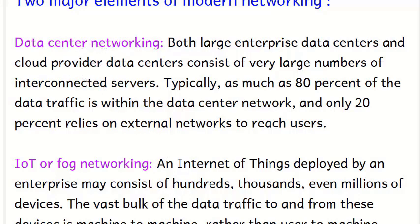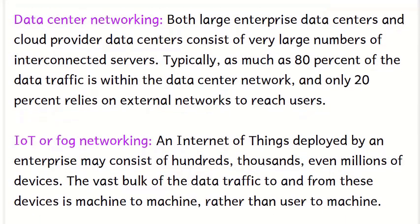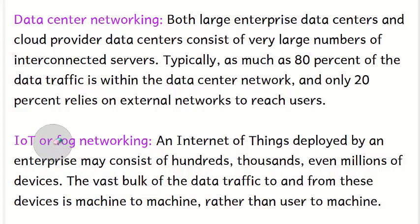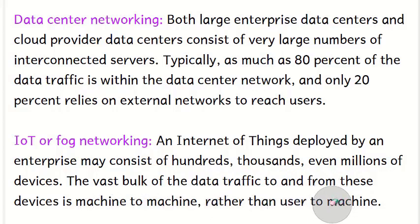The second major element is IoT or fog networking. IoT is deployed by an enterprise and may consist of hundreds, thousands, or even millions of devices connected through the internet — sensors and a variety of devices. The vast bulk of data traffic to and from these devices is either machine-to-machine or user-to-machine. These are the main drivers for modern networking.